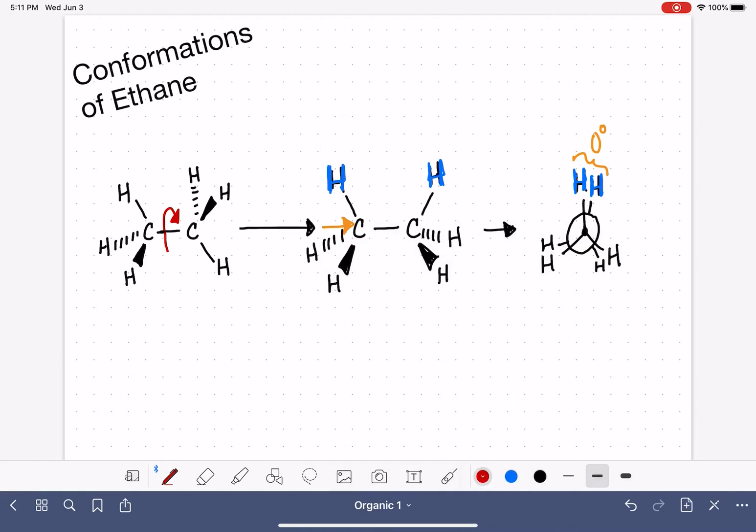This particular conformation of ethane is called the eclipsed conformation, and its name should make sense to you because the hydrogens are stacking in front of each other, or they are eclipsing each other. The eclipsed conformation has a dihedral angle of zero degrees.